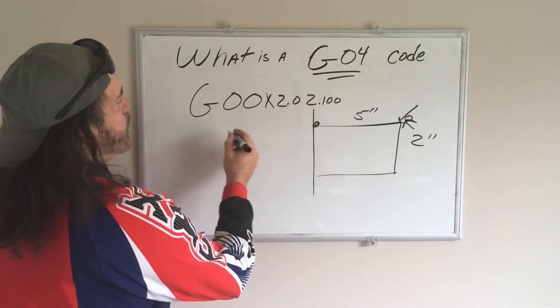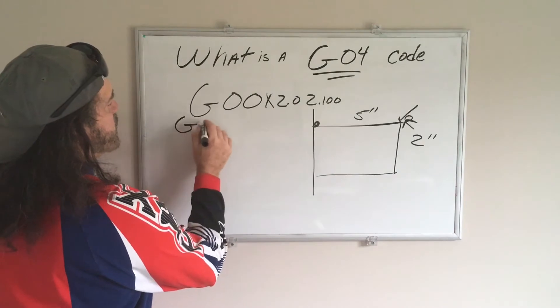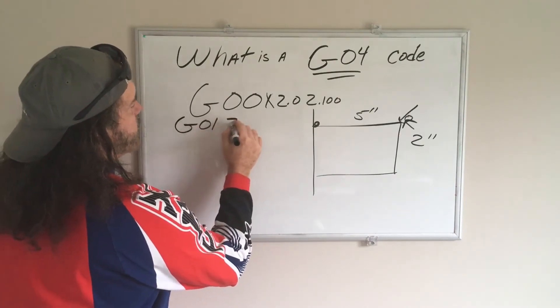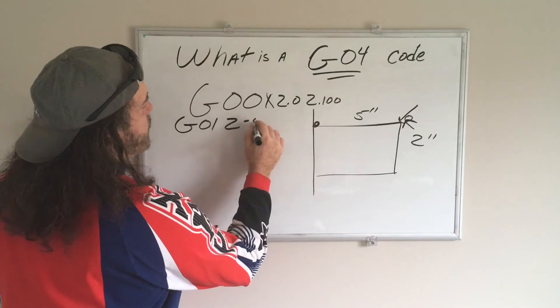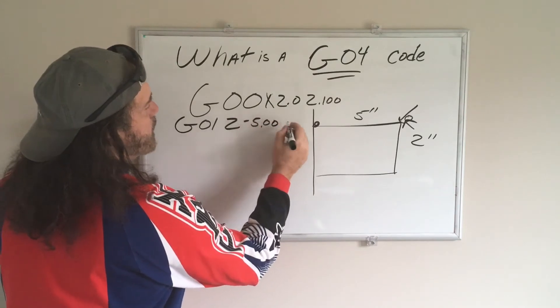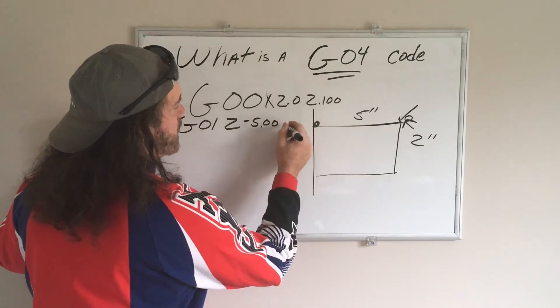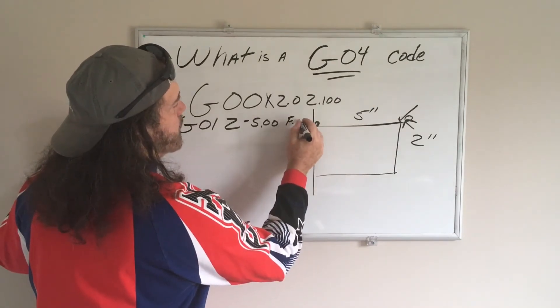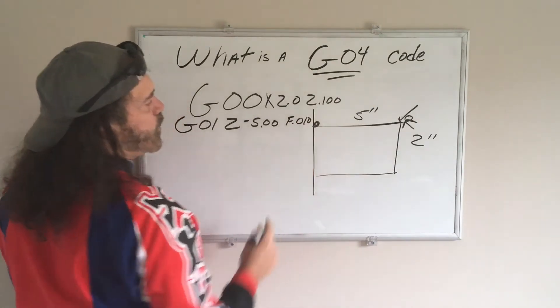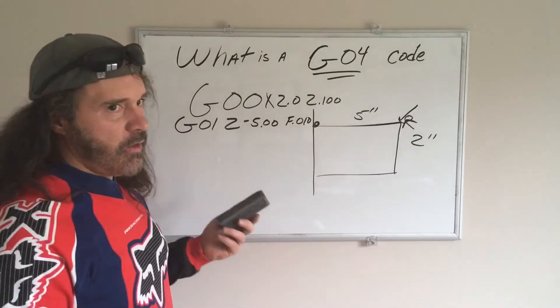And, we're going to do a feed move, which is G01. We'll see negative five inches, and a feed rate of ten thousandths per revolution, because we're on a lathe.